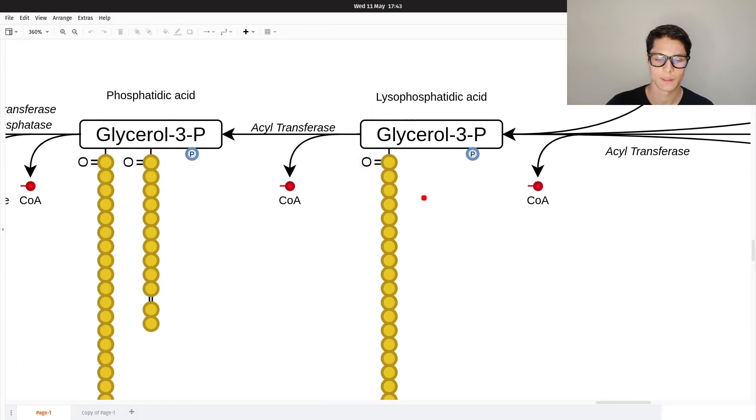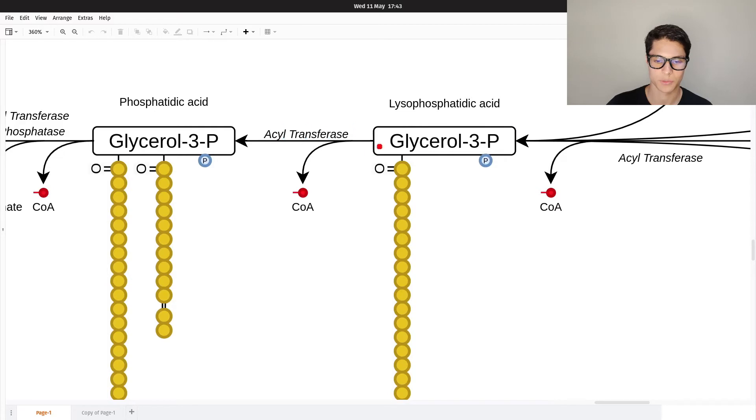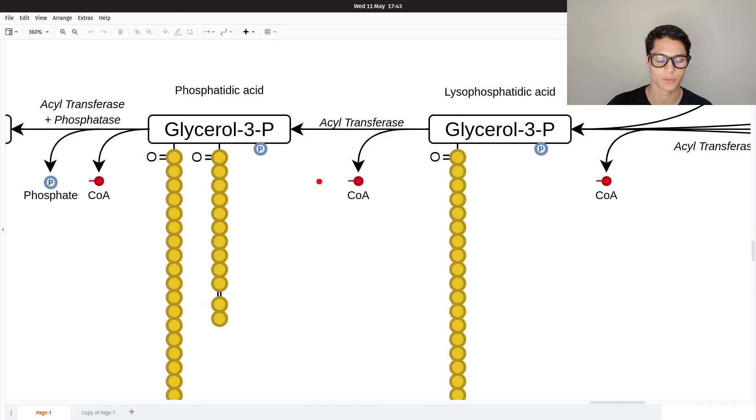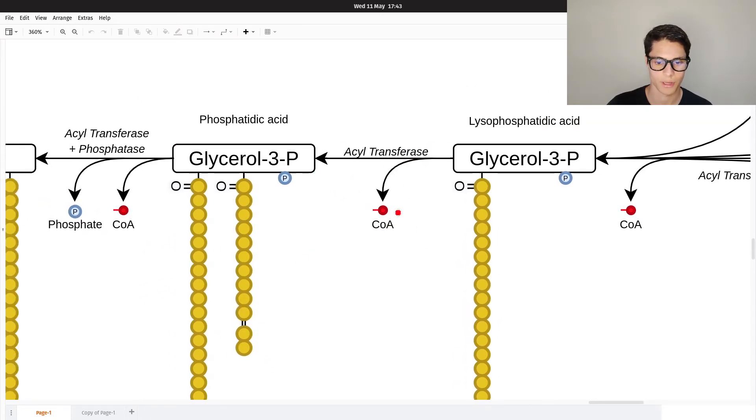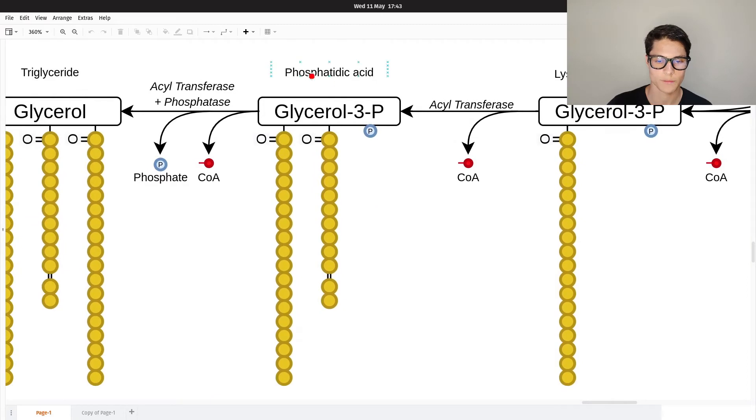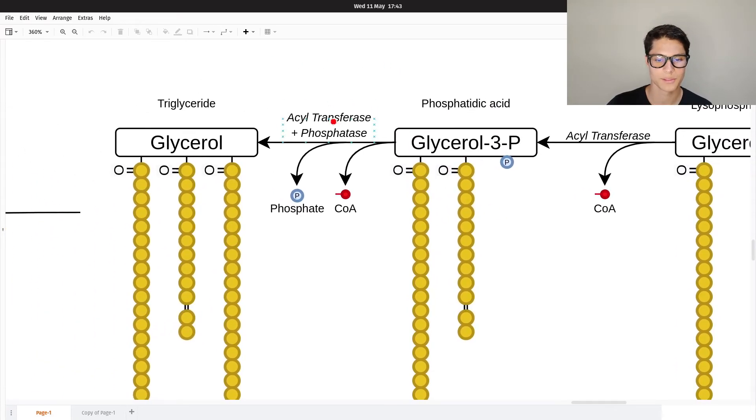Then another acyl transferase will get the second fatty acyl-CoA and we'll add it on carbon number two, getting rid of the CoA, and we get phosphatidic acid.